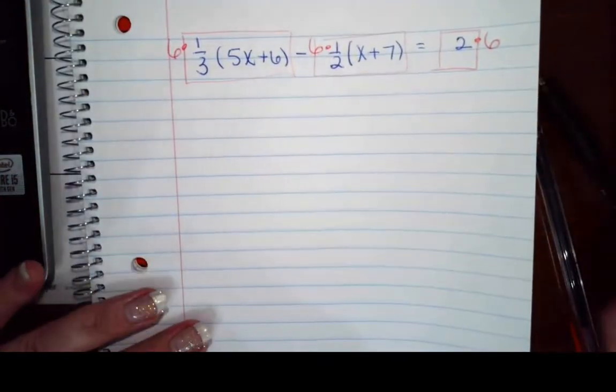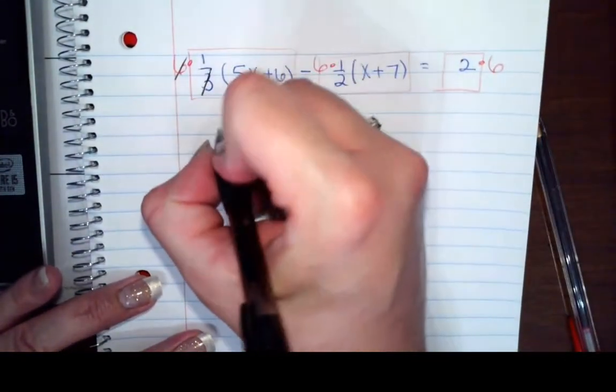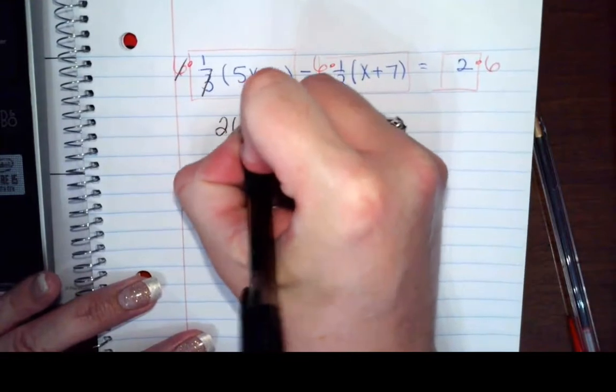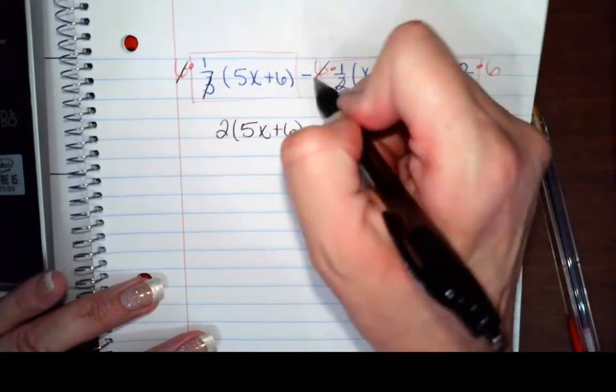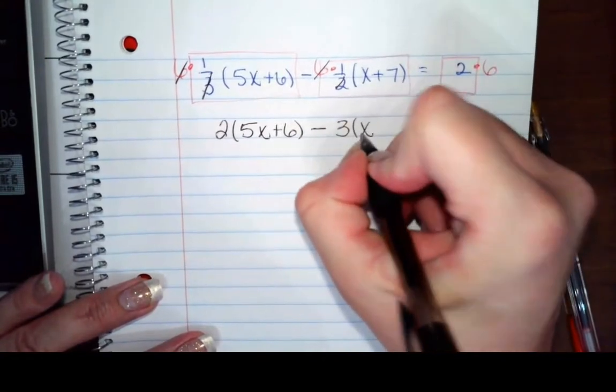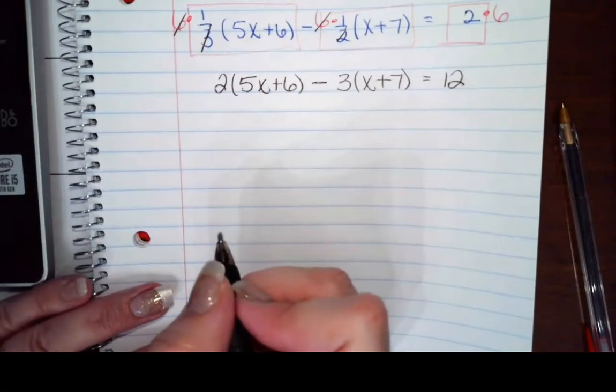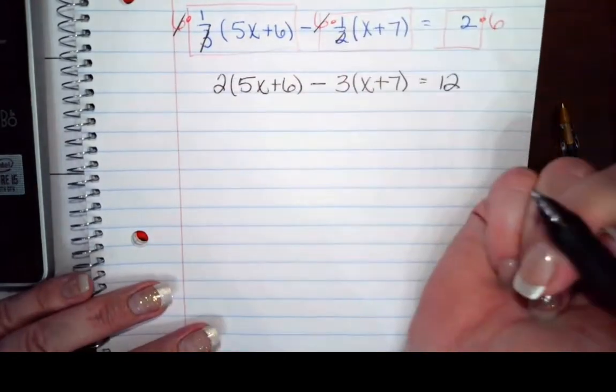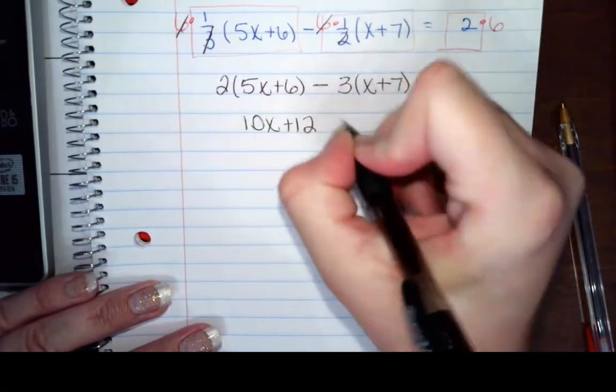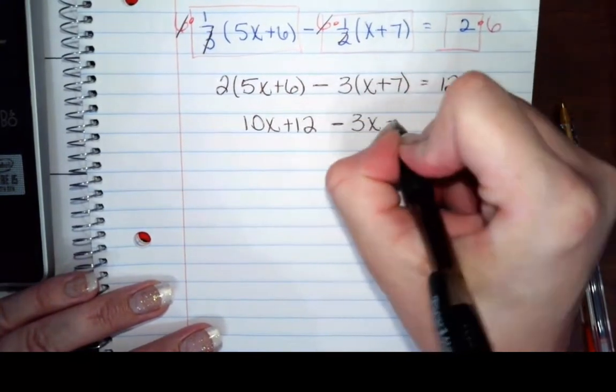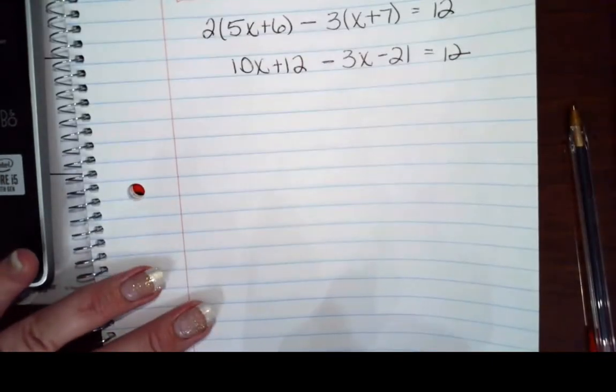Make sure you get all three of them. And so this reduces. 3 goes into 6 twice. So I now have 2 times 5x plus 6. 2 and 6 reduces to 3 times x plus 7, and that's going to equal 12. So I can distribute. This gives me 10x plus 12. This gives me negative 3x minus 21. That gives me 12.